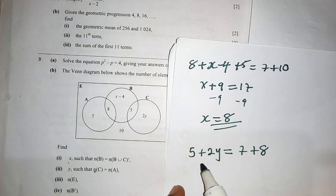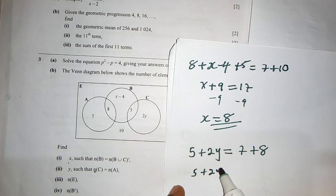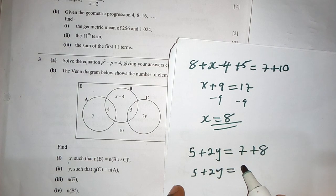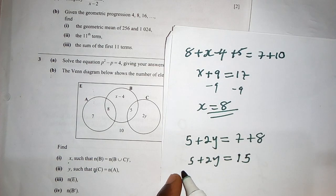So when we add these, we have 5 plus 2y is equal to, and then this side it would be 15. And then we subtract 5 from both sides, we have 2y is equal to 10.